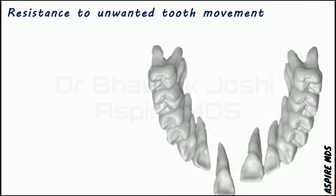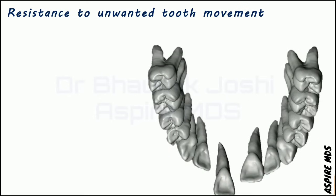Anchorage is defined as resistance to unwanted tooth movement. For example, where a central incisor is outside the arch and we need to bring it back in with orthodontics, the wanted tooth movement is the tooth coming back into the arch. To achieve this, we take support from other teeth. These other teeth providing support for the required tooth movement are the anchors. If the anchors move, that is known as unwanted tooth movement. Getting the wanted tooth movement while the anchor teeth resist displacement is known as anchorage.